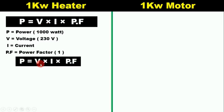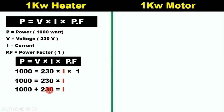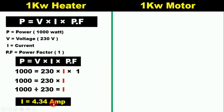Now using this formula, putting in all the values: power is 1000, voltage is 230, we have to find current, and power factor is 1. When we multiply 230 by 1 it remains 230. Now divide 1000 by 230 — we get the value of current as 4.34 ampere. So a 1 kilowatt heater working on single phase power supply will consume 4.34 ampere of current.